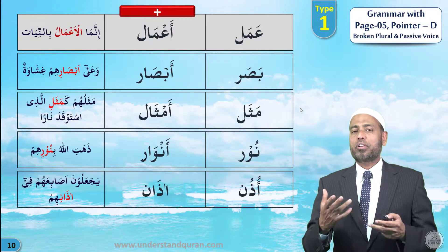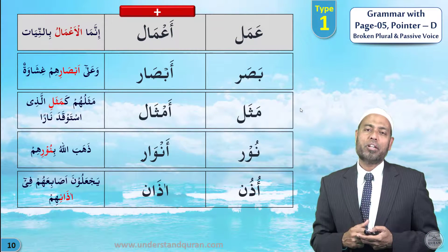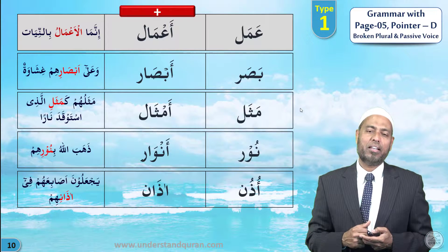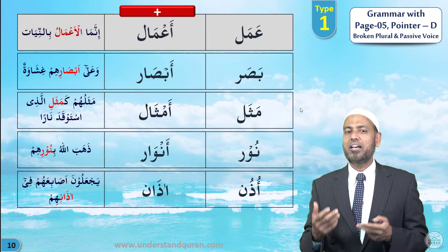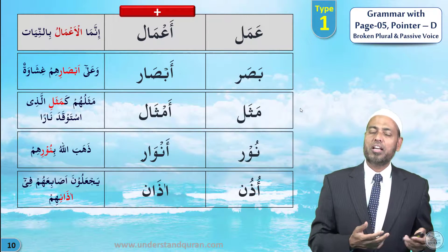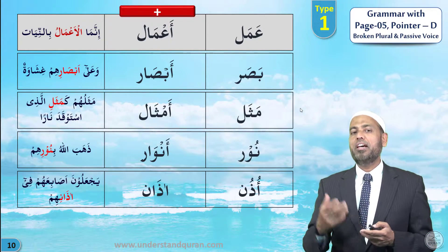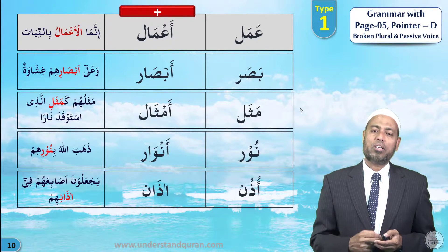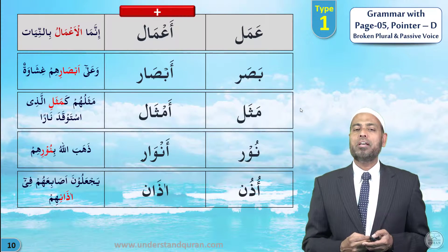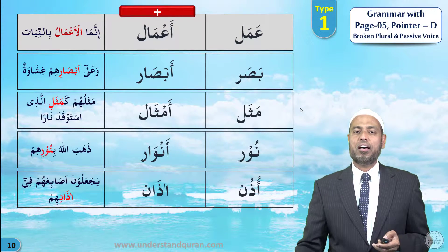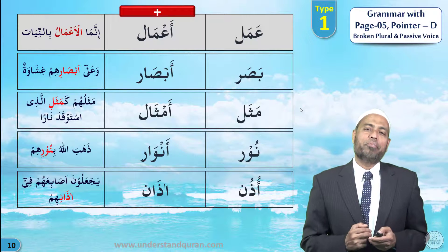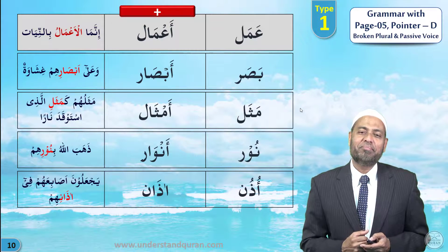Can you give me the plurals? Amal — a'mal. Basar — absar. Mathal — amthal. Noor — anwar. Udhun — adhan. Well done, Alim.